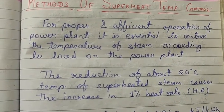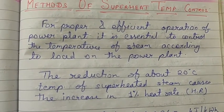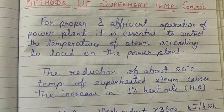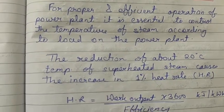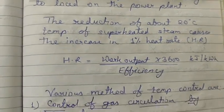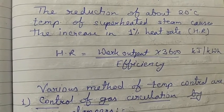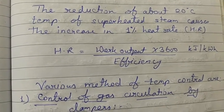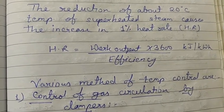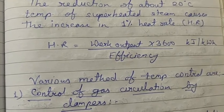The reduction is about 20 degrees centigrade, not more than that. This causes a 1% change in heat rate. The heat rate is defined as work output — 3600 divided by efficiency — in kJ per kWh.